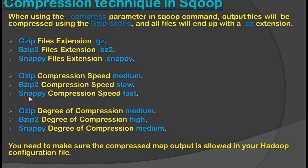Gzip compression speed is medium, bzip2 compression speed is slow, and snappy compression speed is fast. Gzip degree of compression is medium, bzip2 degree of compression is high, and snappy degree of compression is medium. For example, if we compress 100 GB of data: bzip2 reduces it to about 30 GB, gzip reduces it to about 40 GB, and snappy compresses it to about 40 to 42 GB. So bzip2 compresses data more than the other two techniques.